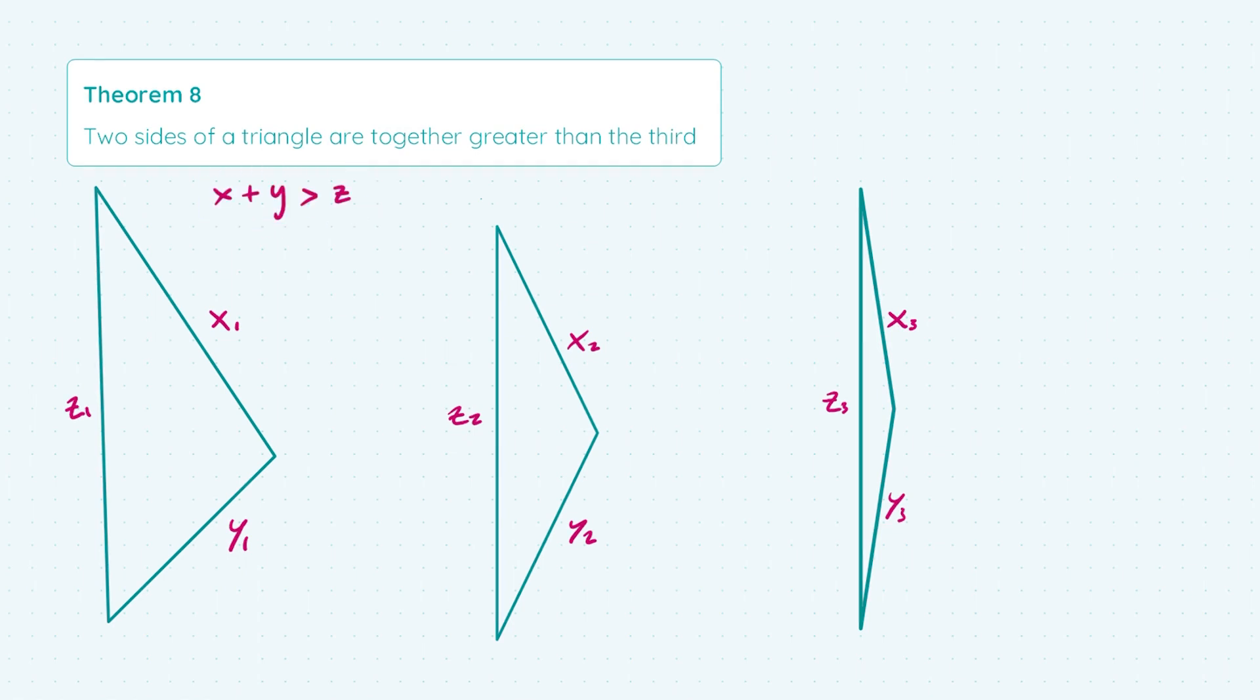So that means that regardless of the lengths involved, x plus y is always going to be greater than z and it's also going to be true that x plus z is greater than y and also that y plus z is greater than x. So it doesn't matter which sides you choose, if you add them together they're always going to be greater than the length of the third side.